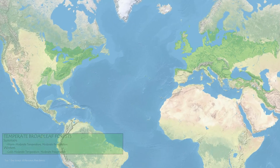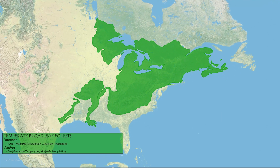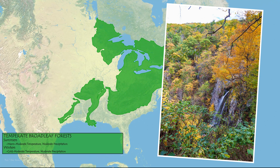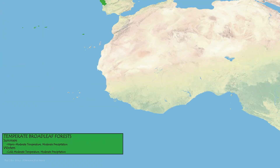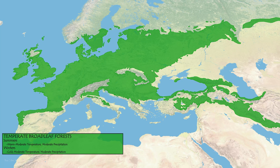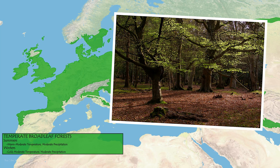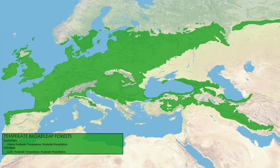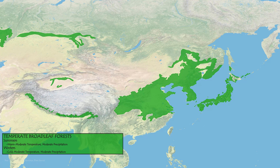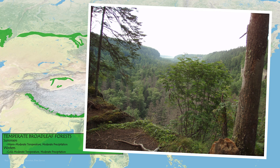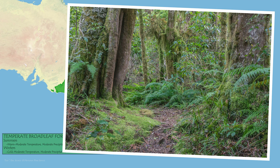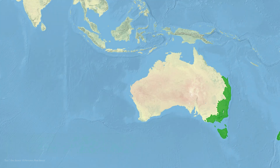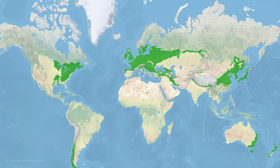Moving away from the equator, we'll start to see a larger variety in temperature differences between seasons, giving us the temperate zone. The temperate broadleaf forests stretch across eastern North America, Chile, much of Europe, China, Japan, eastern Australia, and New Zealand. These forests tend to have moderate but consistent rainfall, roughly 2 inches a month all year, with 10 to 20 degrees of seasonality between the cold winters and moderate summers.